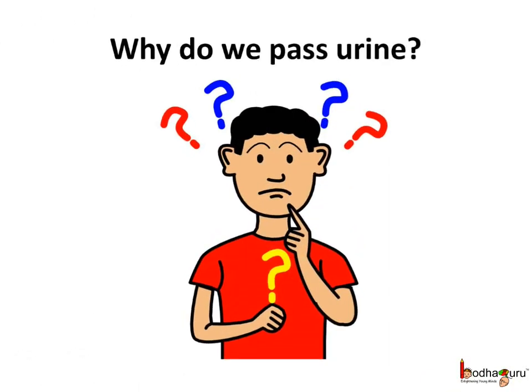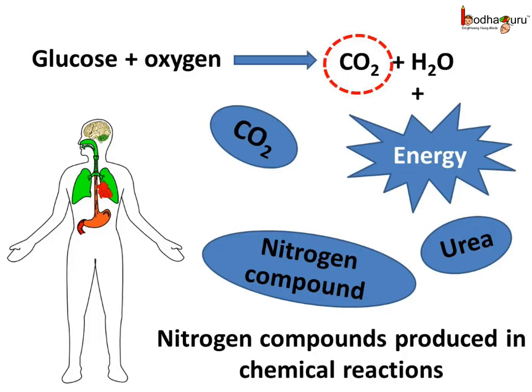Have you wondered why humans and other animals pass urine? What would happen if humans don't urinate? Many harmful waste substances containing nitrogen are formed inside our body in many processes. Our body organs perform many processes to form substances required by the body, but during these complex chemical changes, few substances are produced which are not required and are in fact harmful, like urea and uric acid.